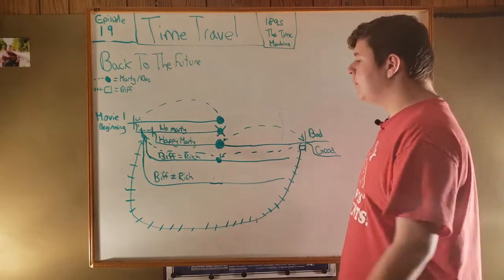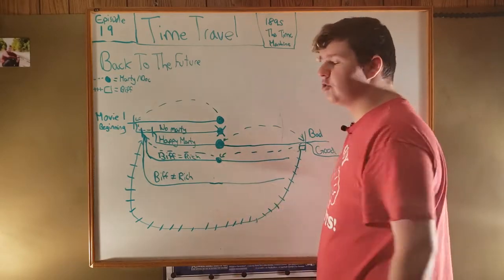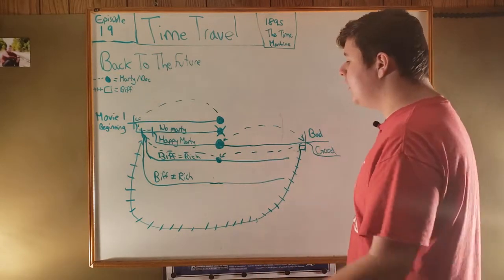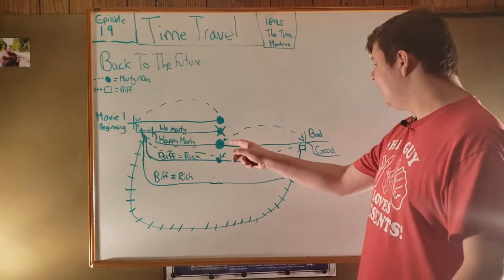In the first movie, Marty goes back in time, which prevents his parents from ever meeting. This results in a future where there is no Marty McFly. So, he has to stay in that past in order to make a future where he is there.